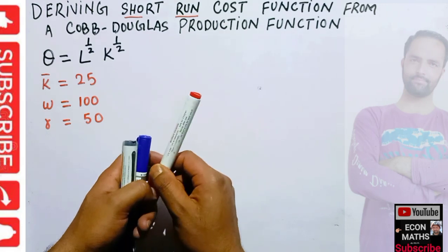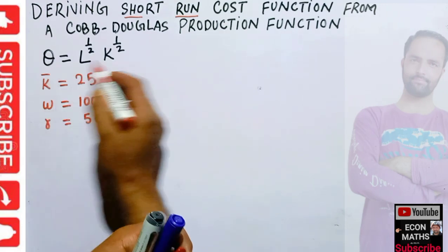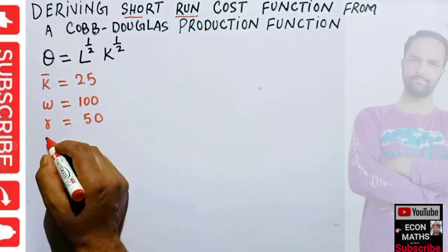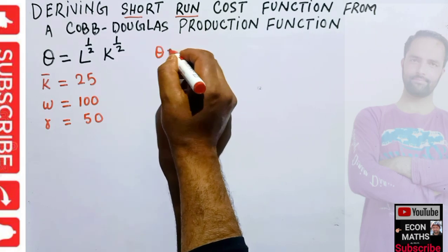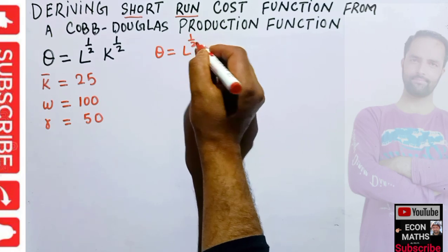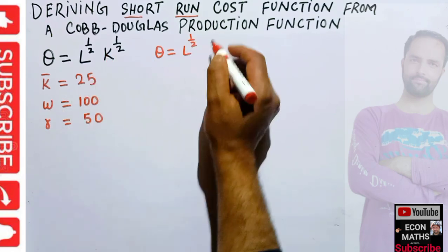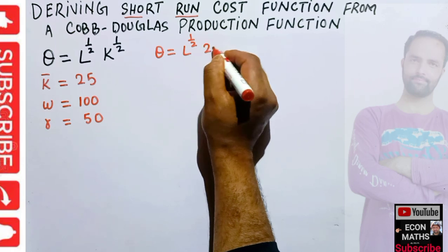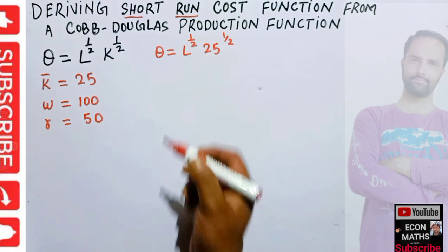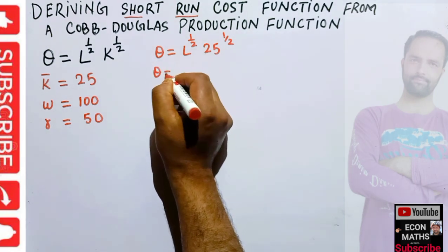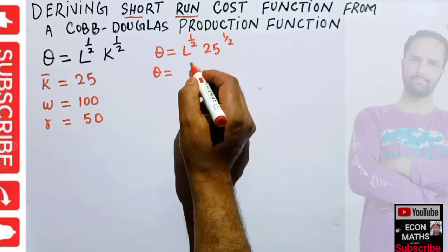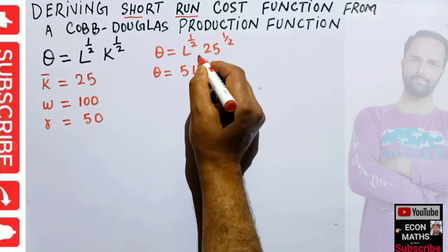Now let's insert these values. Our production function becomes Q = L^(1/2) * (25)^(1/2). Since the square root of 25 is 5, we can rewrite this as Q = 5 * L^(1/2). This is our production function with capital fixed at 25 units.